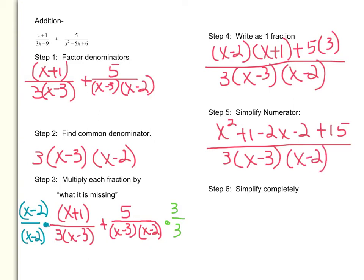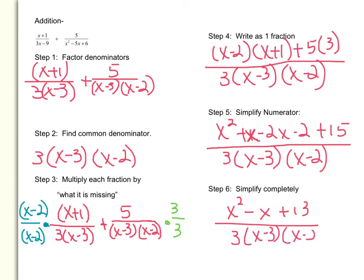Now the last step, step number six, is to simplify completely — that means simplify the numerator; the denominator won't change. I don't have any other x squared terms, so x squared stays. I notice I made a little mistake: that should be plus x. So we have x minus two x, which is minus one x, or just minus x. And I can combine negative two and fifteen, which gives plus thirteen. So the final answer is x squared minus x plus thirteen, all over three times x minus three times x minus two. We've just added two rational expressions.